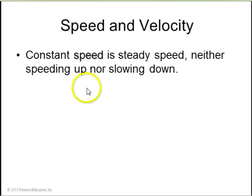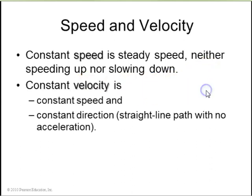Constant speed is steady speed. It's not speeding up, not slowing down. Constant velocity means two things, constant speed and constant direction, so a straight-line path with no acceleration.